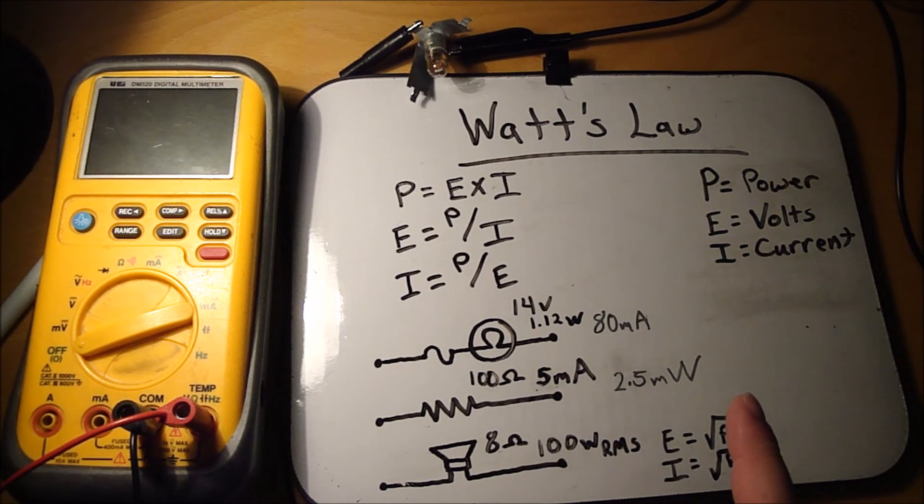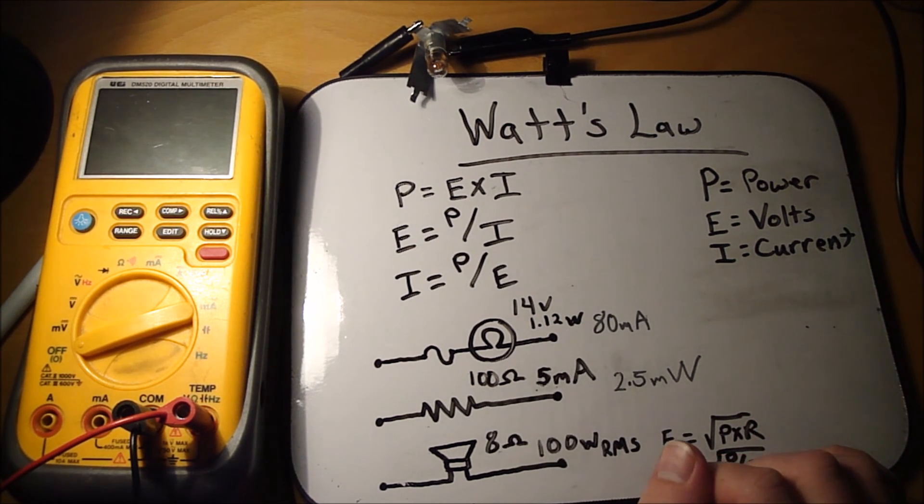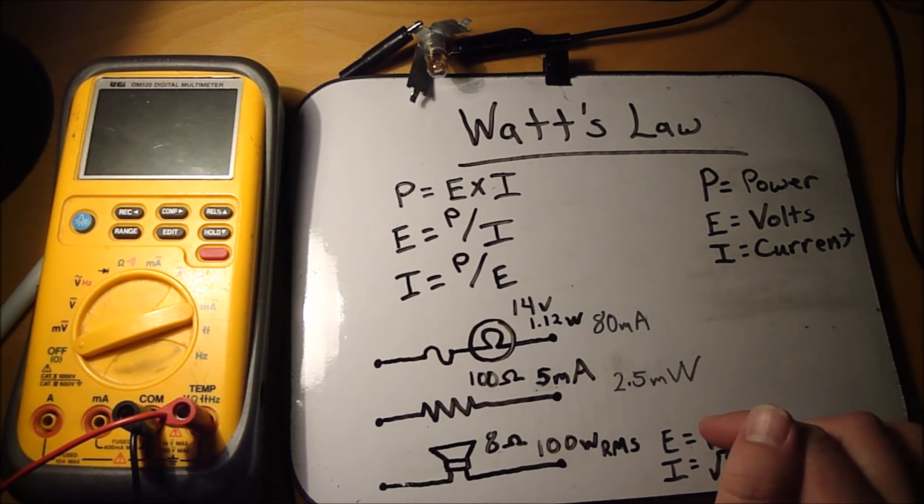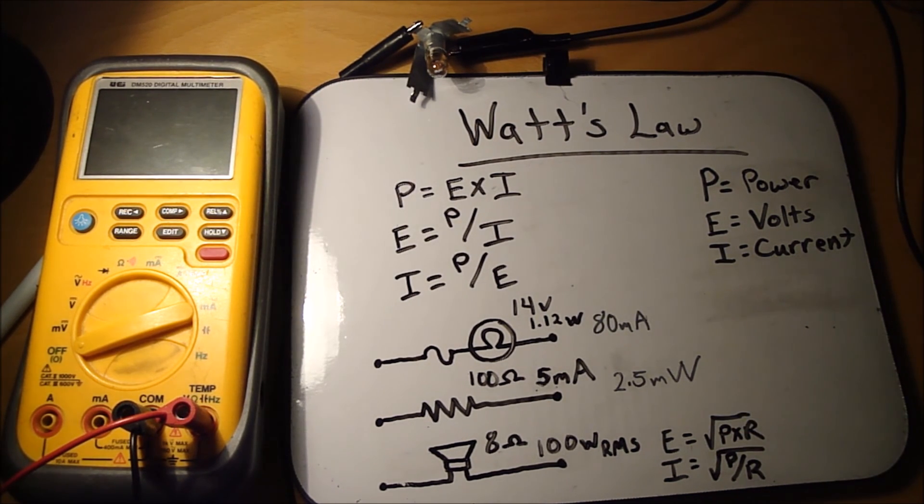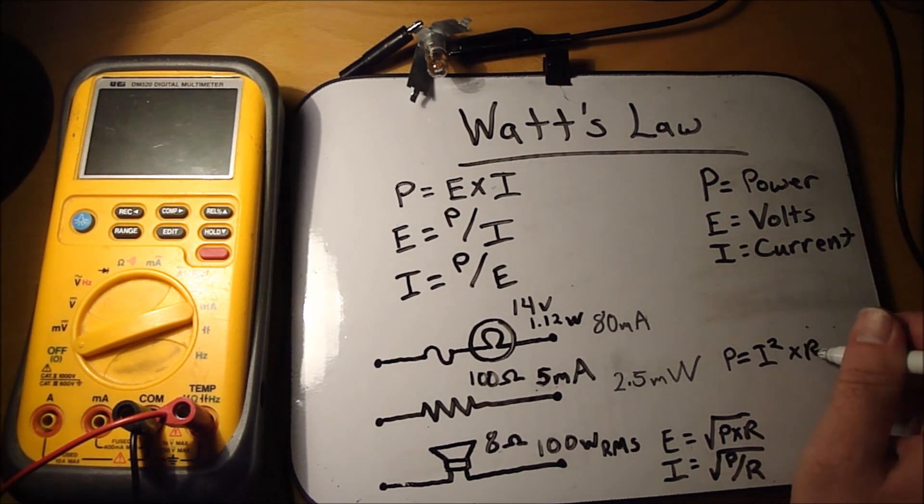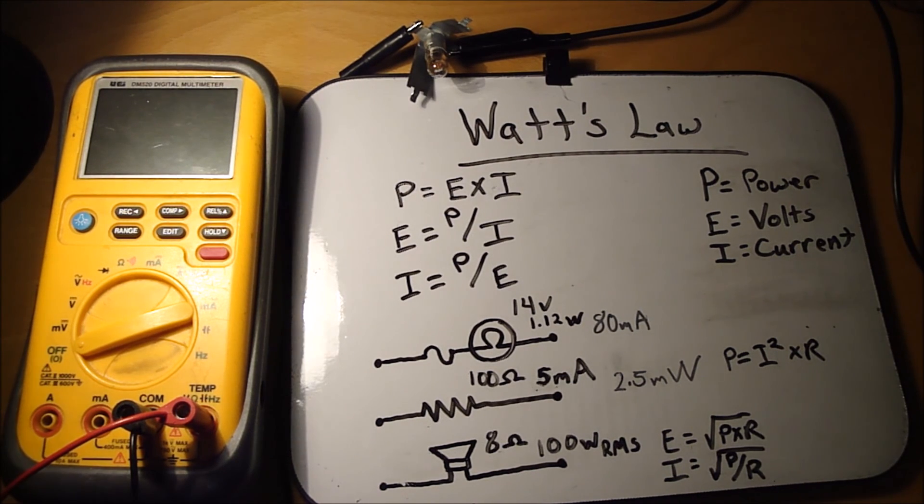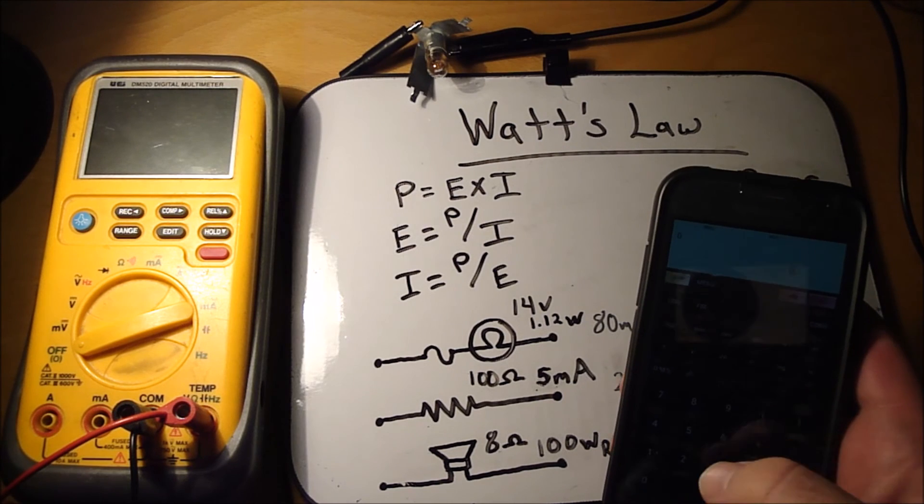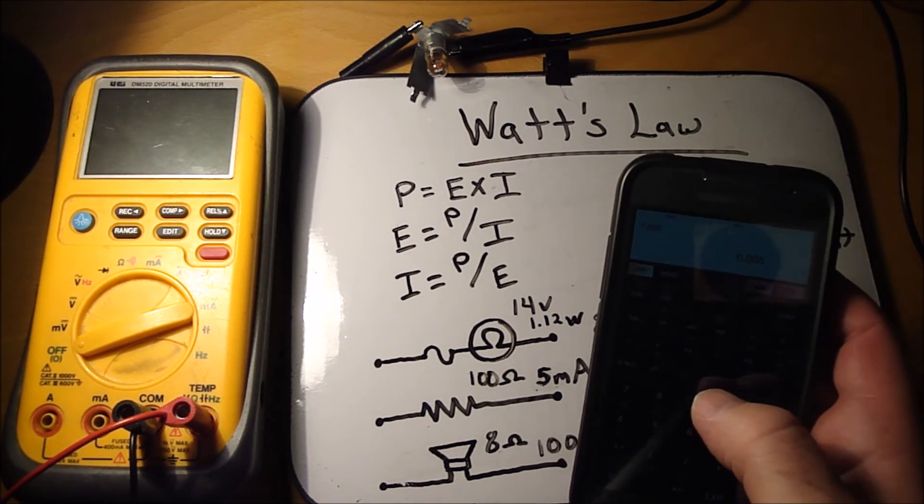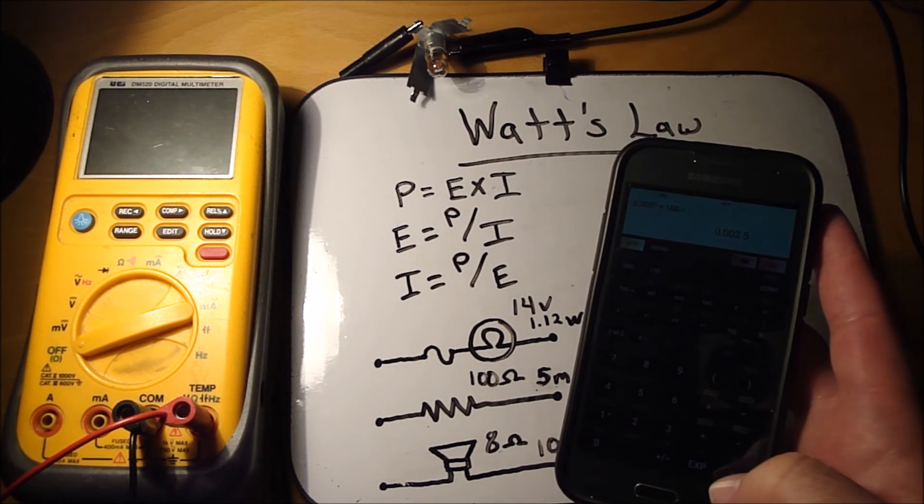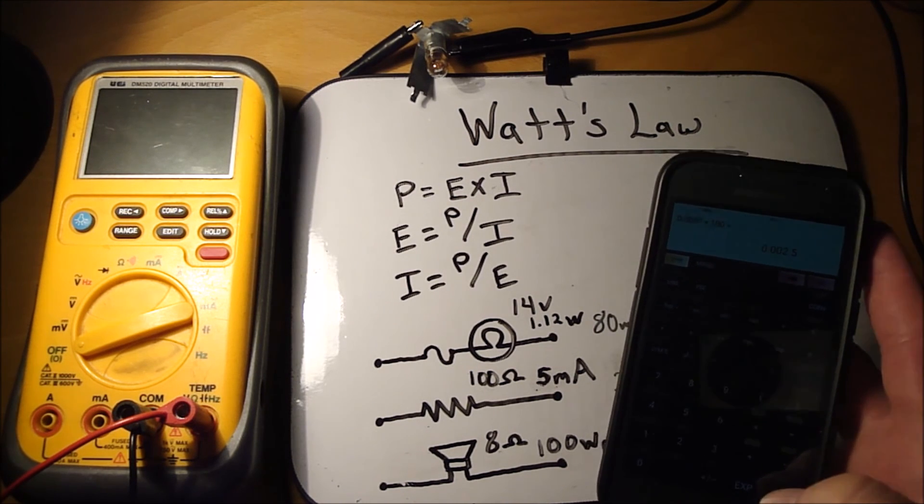So in this circuit up here, to calculate the amount of power that that resistor would dissipate. I used Ohm's law to calculate the voltage drop by taking the amps times the resistance and then taking the voltage drop times the current drop. But you don't have to use those two separate equations. You can just use one. So you would use P equals I squared times R. So just to show you that that actually works. So the current draw is 5 milliamps which is 0.005 squared times 100 ohms equals 0.0025 so 2.5 milliwatts.